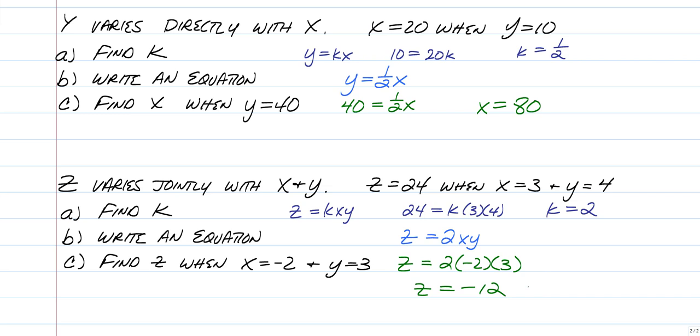There goes your video on variation. Pretty simple when you think about it. All you're really doing is manipulating equations. Just make sure you know what it means when I say find K versus write an equation. If I tell you on a quiz or a test to write an equation for the direct variation and you just write K equals 1 half, you will not receive credit. An equation means you give the whole thing. All right. This is Longo and I'm out. See you, bye.